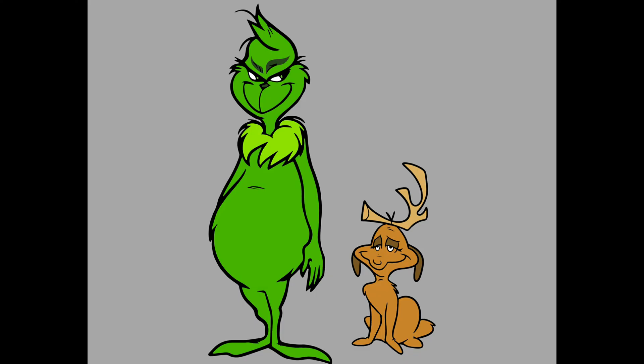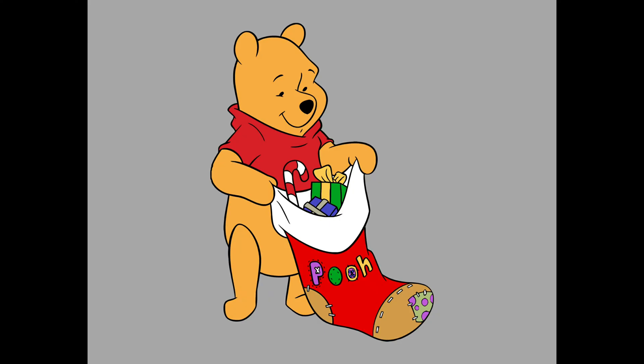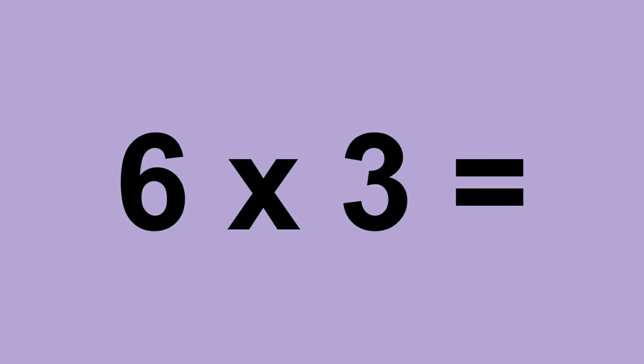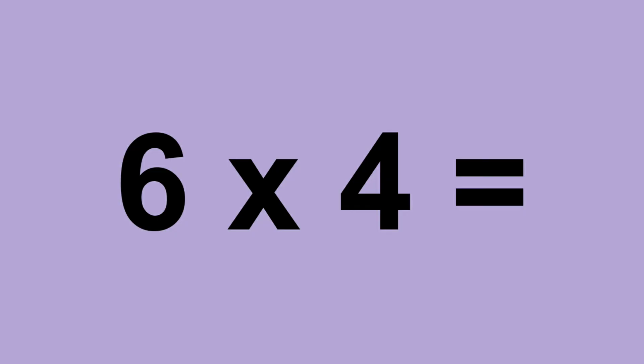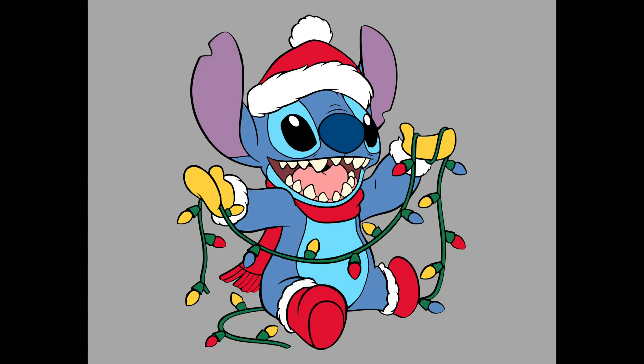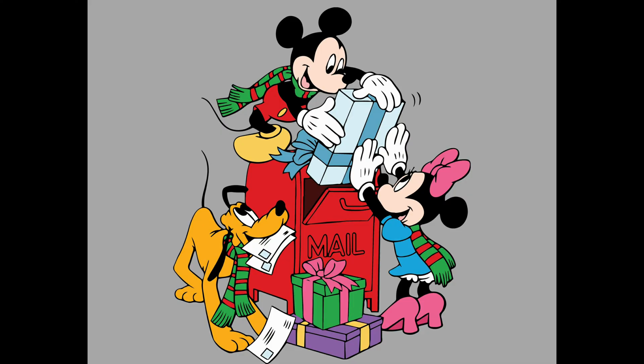Six times zero equals zero. Six times one equals six. Six times two equals twelve. Six times three equals eighteen. Six times four equals twenty-four. Six times five equals thirty. Six times six equals thirty-six. Six times seven equals forty-two.